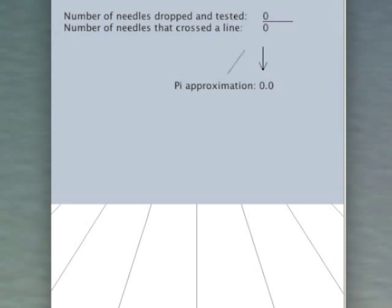So what happens if you drop a needle on a table and that table has a series of parallel lines drawn on it? What are the chances that the needle will land on one of those lines after it's dropped?